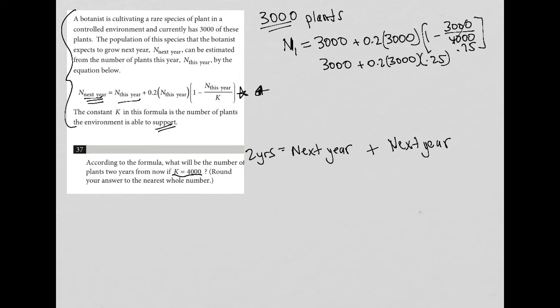Okay, so then I go to my calculator, and I can calculate all of that, and 0.2 times 3,000 times 0.25 equals 150. So all of that is 150. I still have my 3,000 from here. Therefore, the population of plants one year from today will equal 3,150.